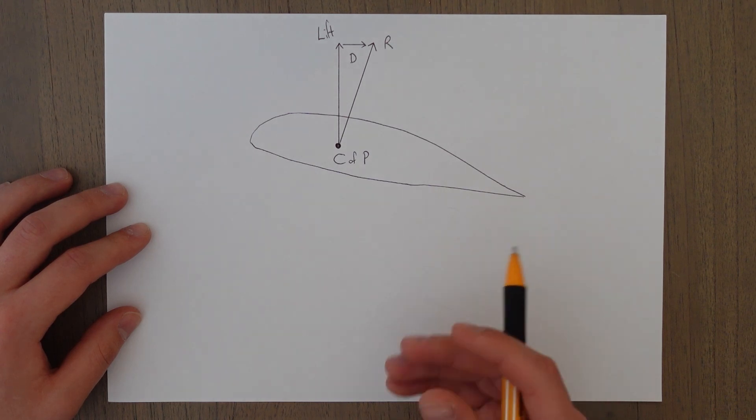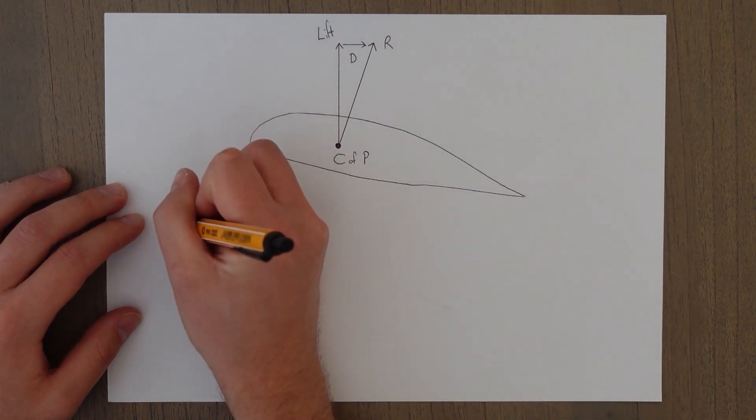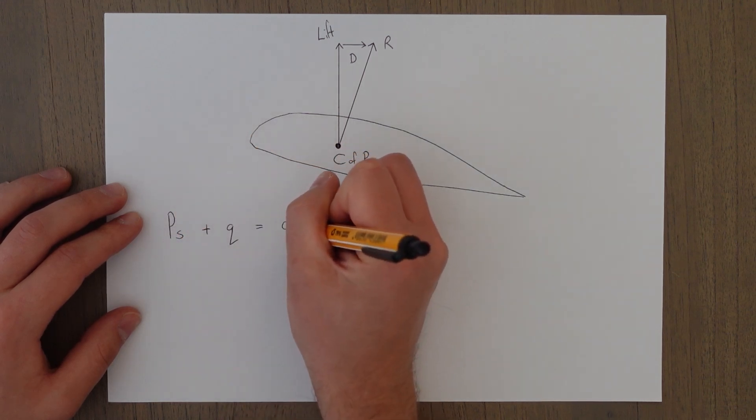The amount of lift that we get is dependent on the dynamic pressure. Because we know that static pressure plus dynamic pressure is always a constant,